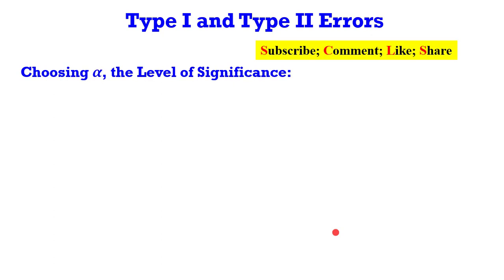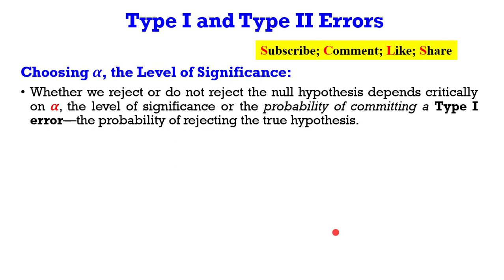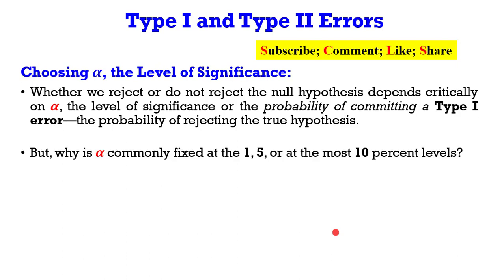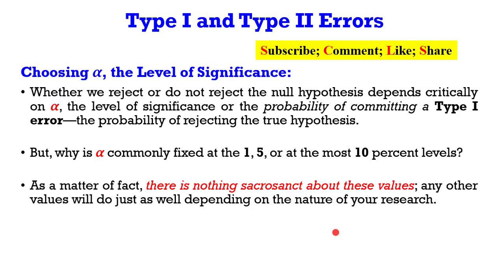Now I'm going to talk about choosing alpha, the level of significance. Whether we reject or do not reject the null hypothesis depends critically on the level by which you set your alpha, which is the probability of committing a type 1 error. But why is alpha commonly fixed at 1, 5, or at most 10 percent? There is nothing sacrosanct about these values — any other values will do just as well depending on the nature of your research. For most people in life sciences, they fix alpha at 1 percent because they are dealing with living things. People in social sciences can fix alpha at most at 10 percent, but the conventional level is often 5 percent.